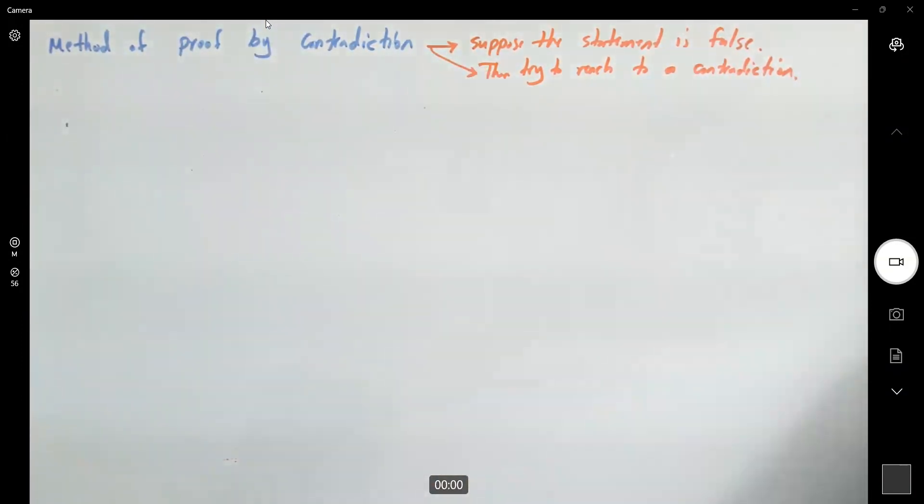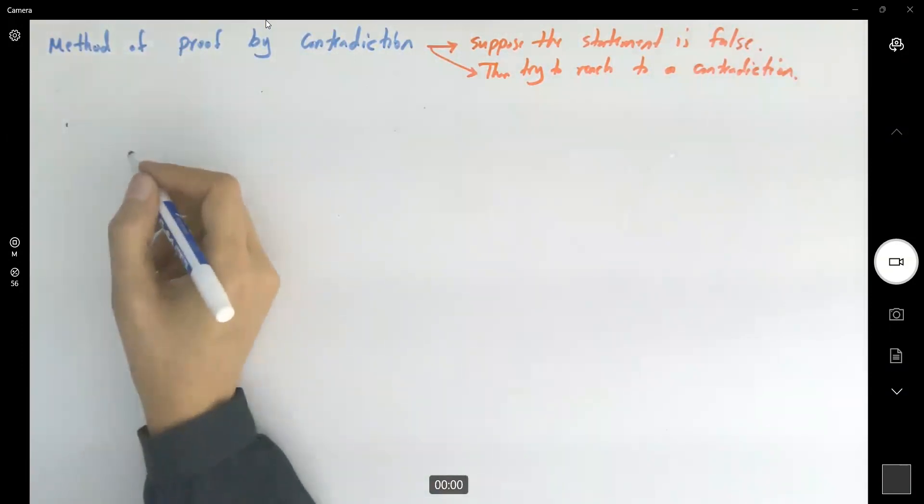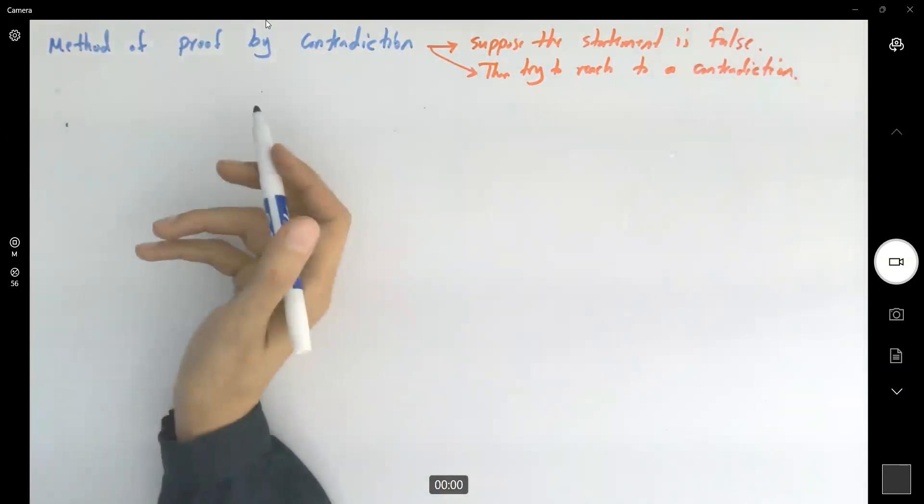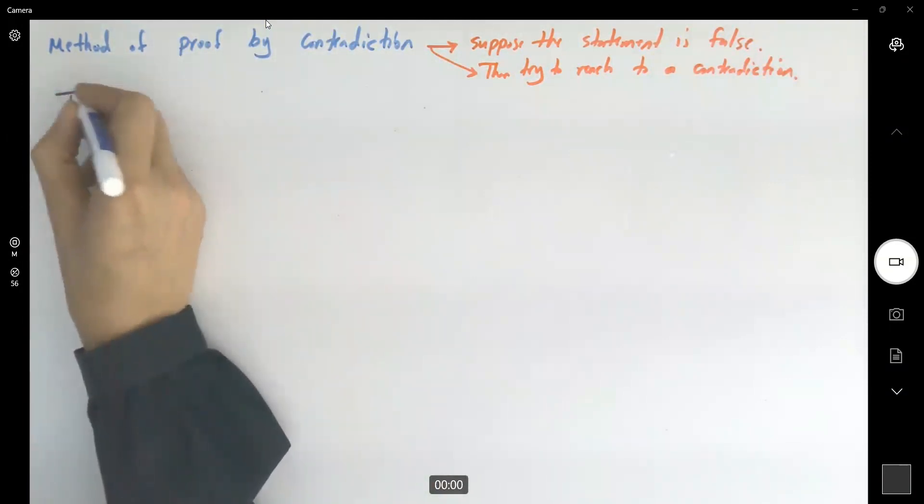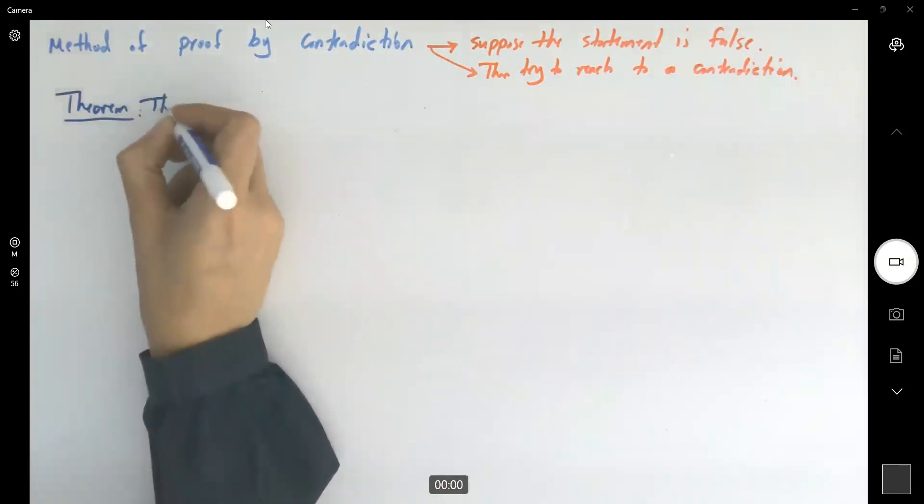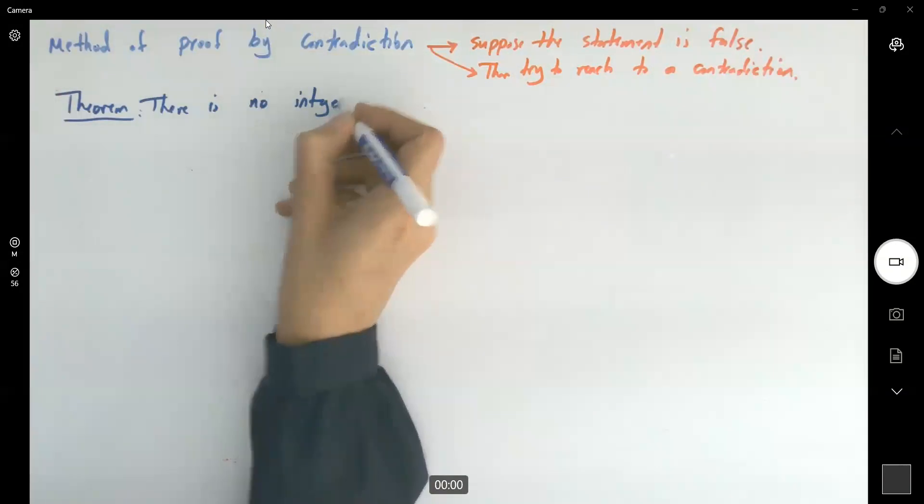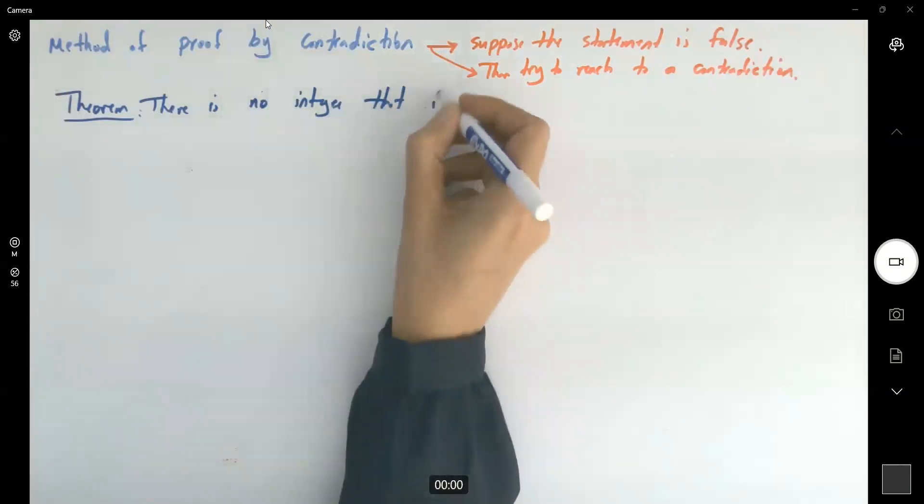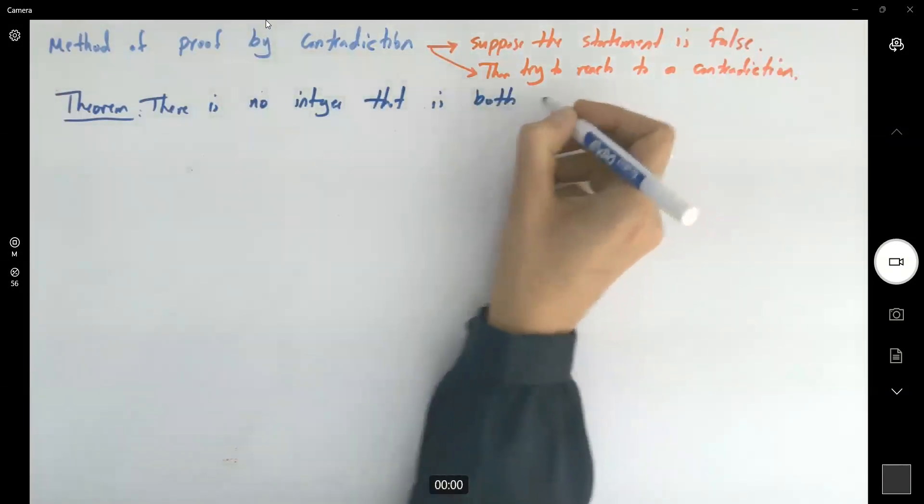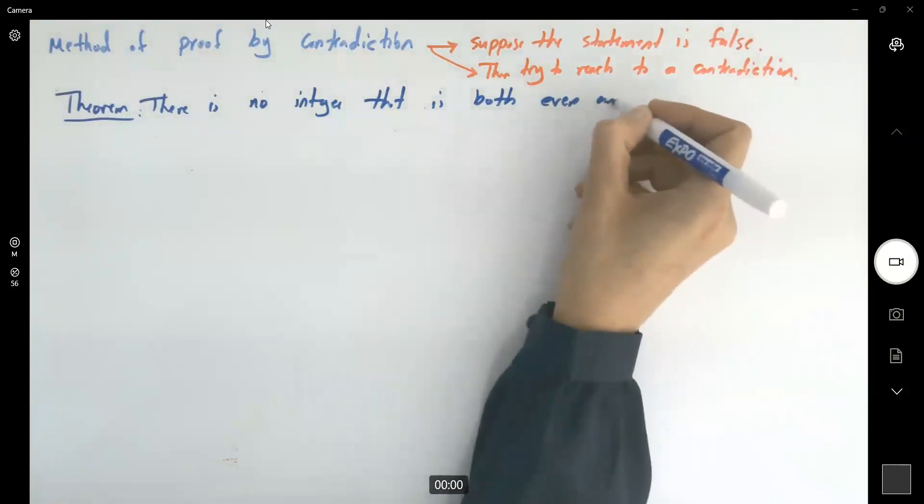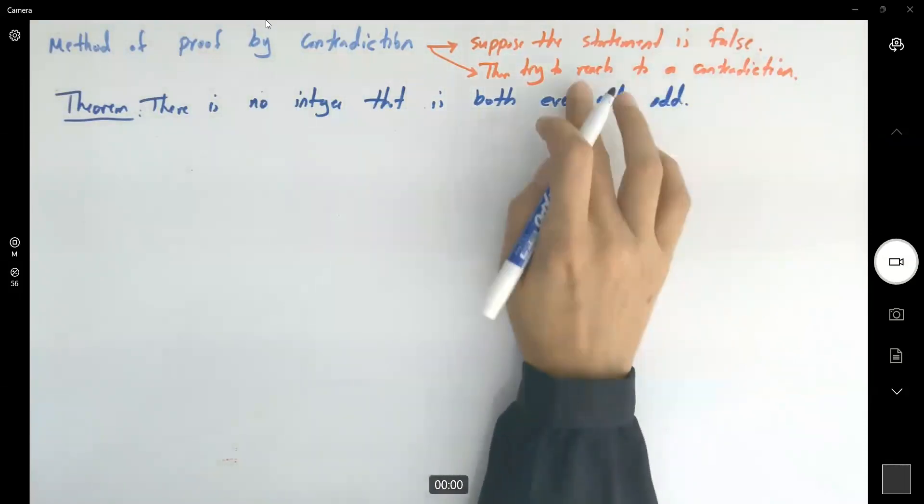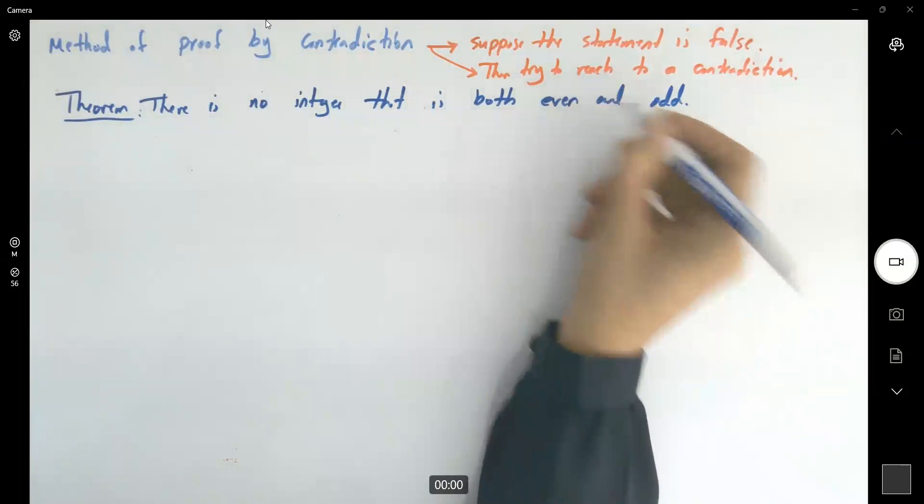The statement says, there is no integer that is both even and odd. So this is my theorem. There is no integer that is both even and odd.